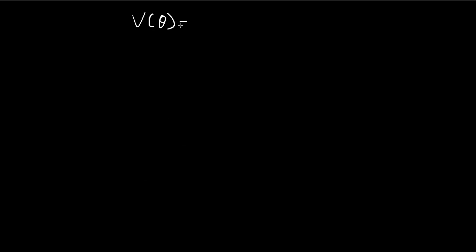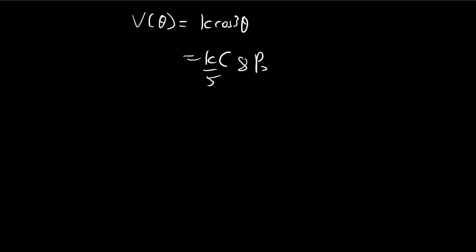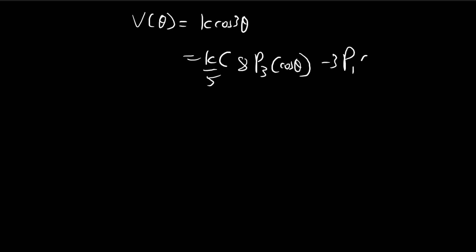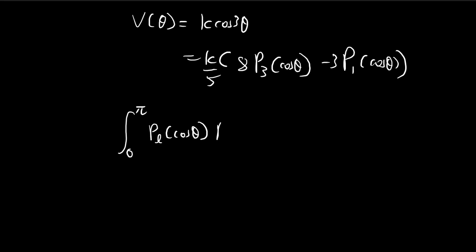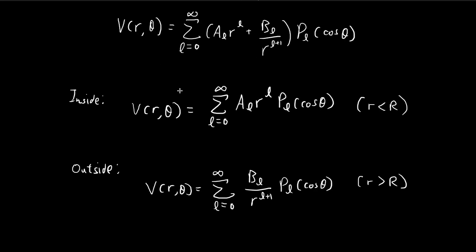So the potential on the surface of the sphere can actually be expressed as 8/5 times P3 minus 3/5 times P1, multiplied by k/5. Once we've derived this, we can now use Fourier's trick with the orthogonality formula. We know that the integral of P_L times P_L' gives 2/(2L+1) if L and L' are equal, and 0 otherwise. We're now ready to apply Fourier's trick to this expression.